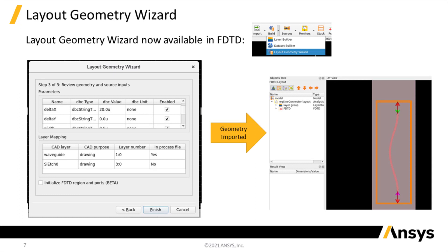The geometry is then imported into FDTD for simulation. A similar wizard can also be accessed in Virtuoso to start the import process from there.